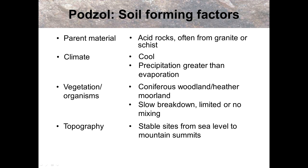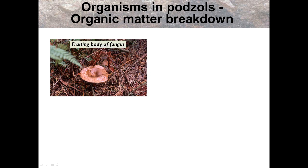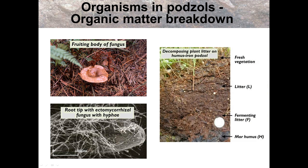Topography: stable sites from sea levels to mountain summits — basically that's where it happens. In our heads, we want to be thinking about areas such as the Cairngorms National Park, particularly when talking about what podzols are used for, and that links into hill sheep farming and the Cairngorms as well. Time: since the end of the last ice age — 10,000 years. There's not a lot of different organic material you can find; no worms to mix it up, no moulds, purely due to the cold climate — again, thinking Cairngorms.